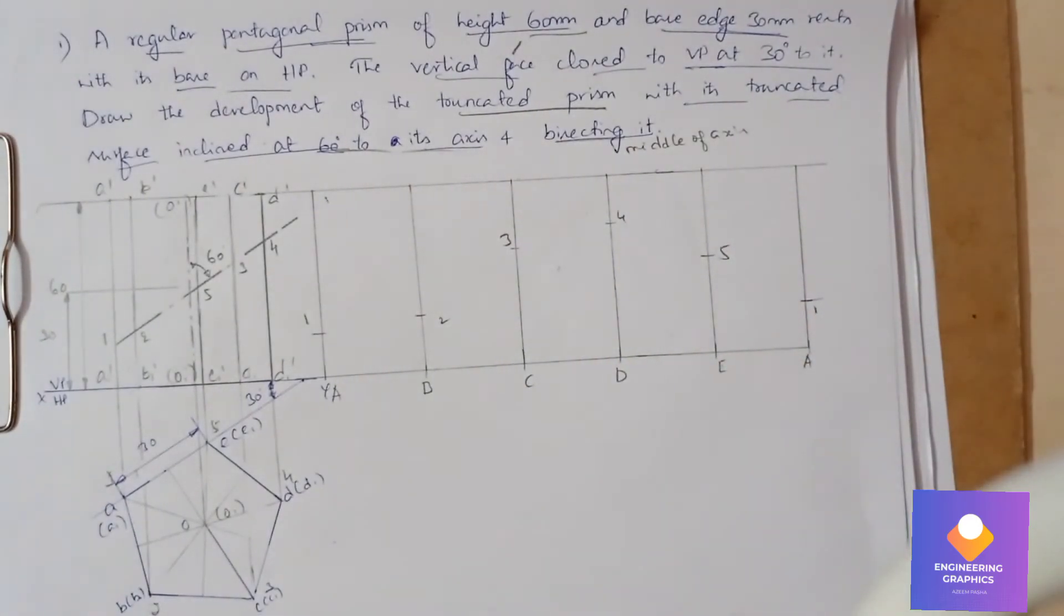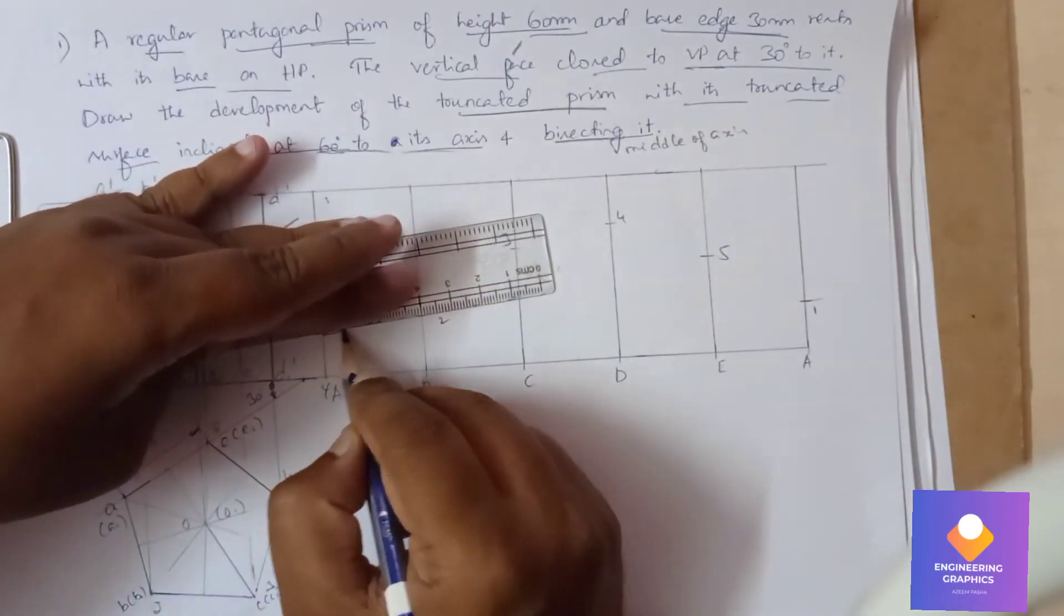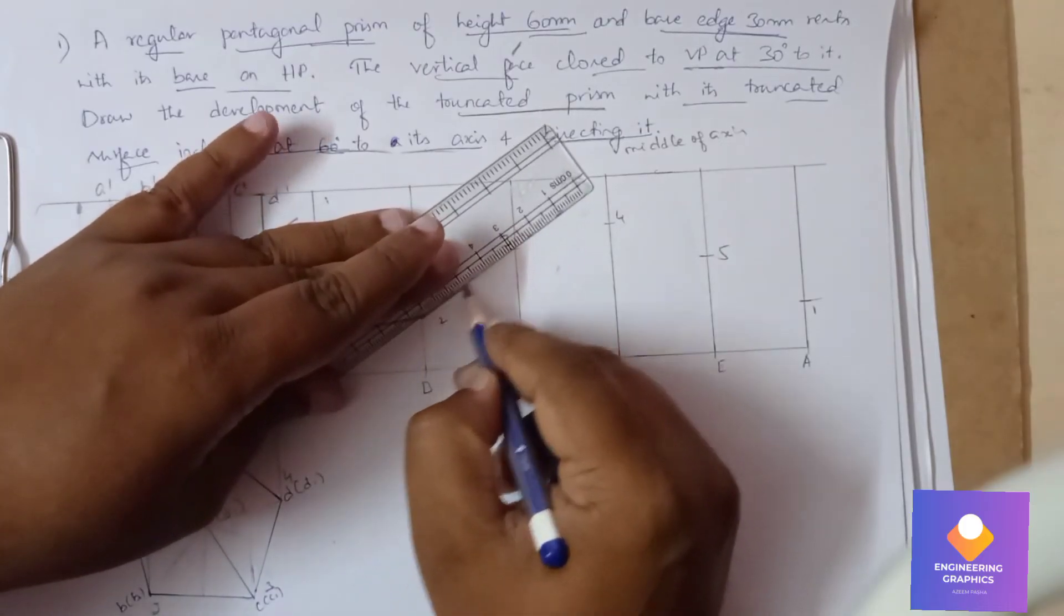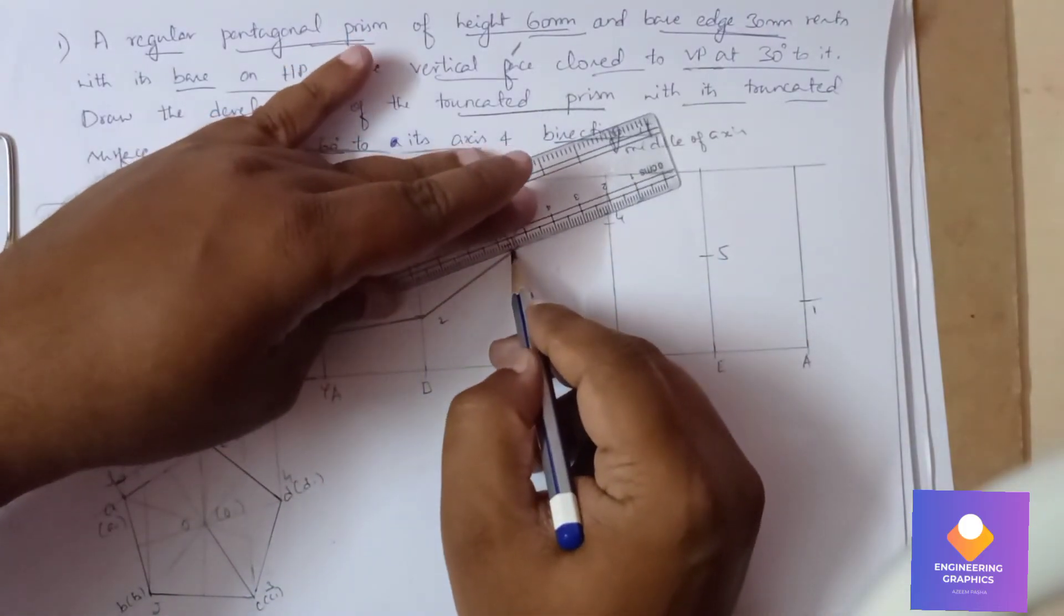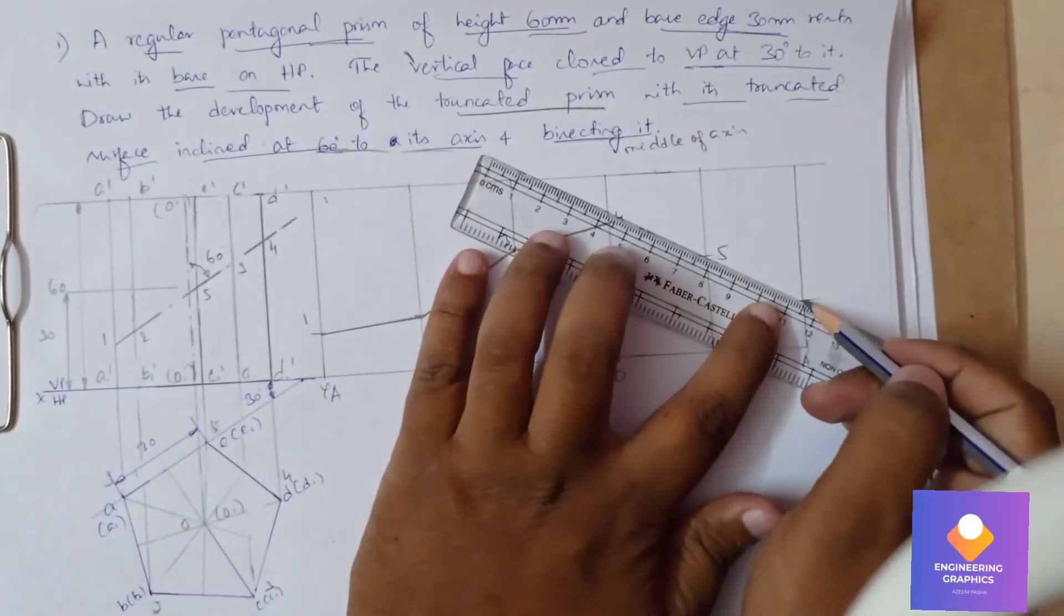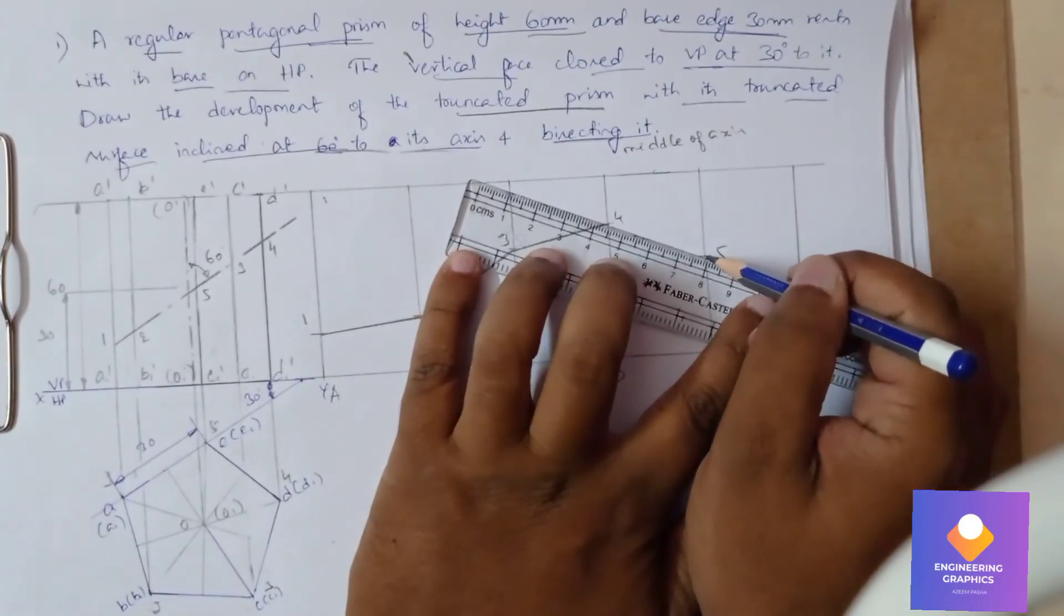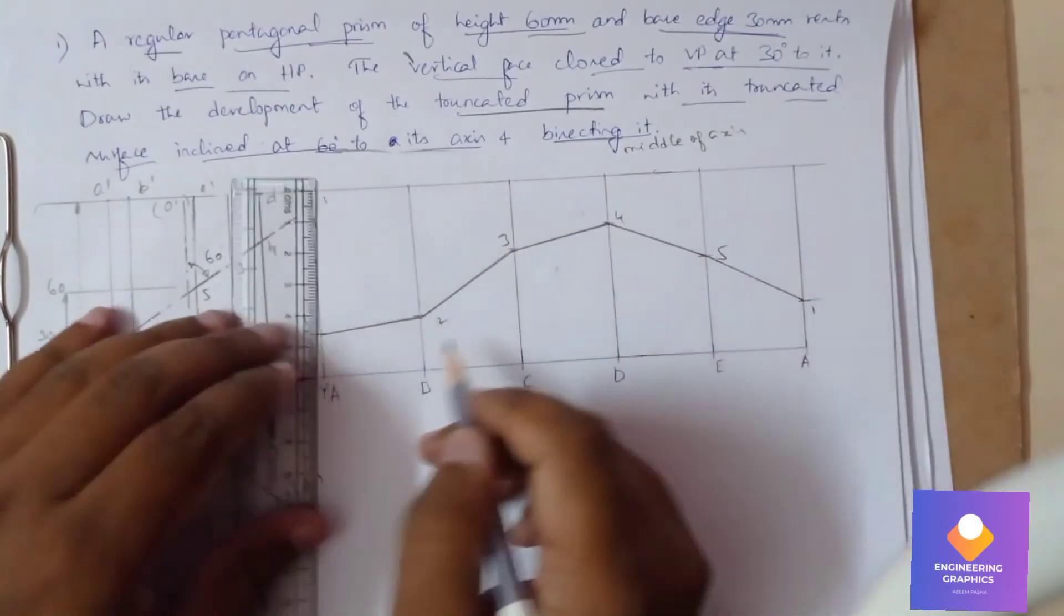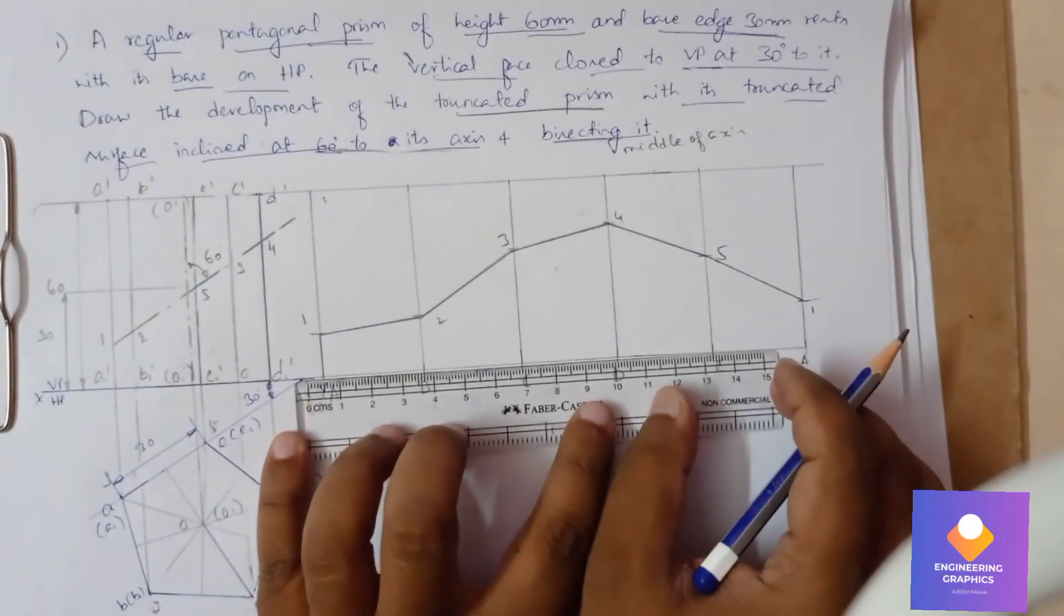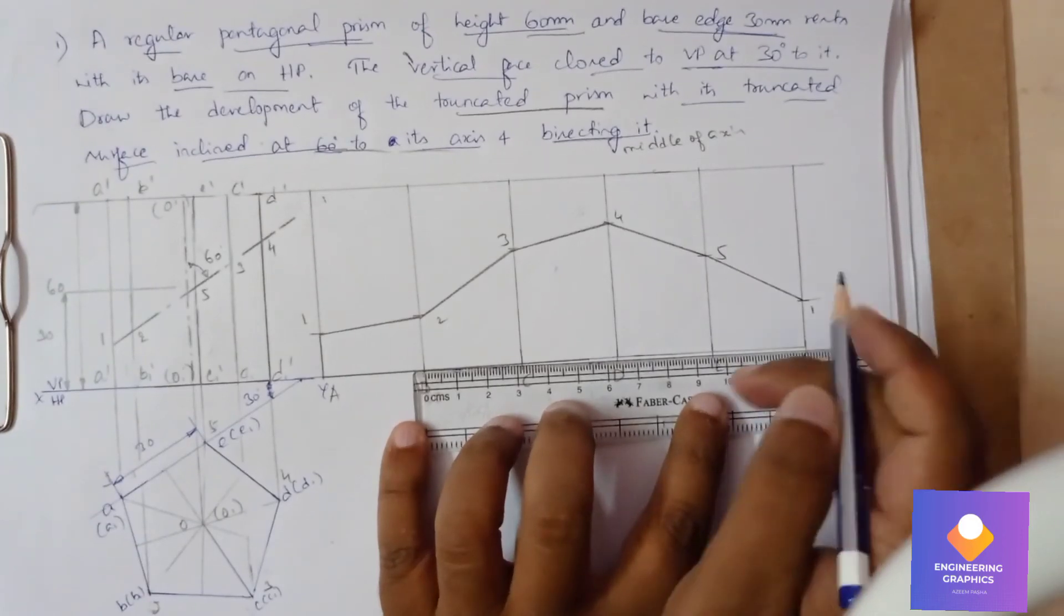Now you can join all these points with the help of a scale using a straight line. Dark the truncated cut portion—the remaining cut portion, we should dark it.